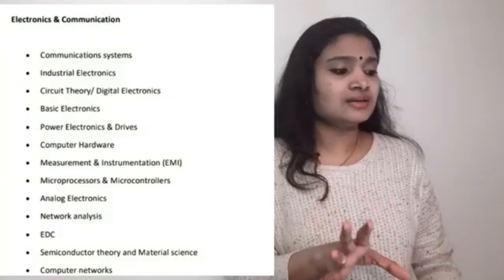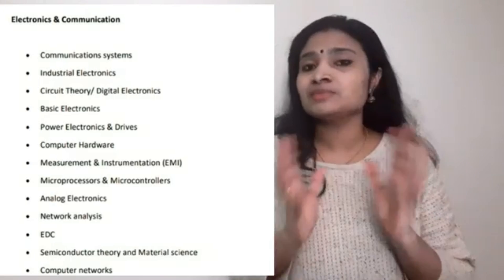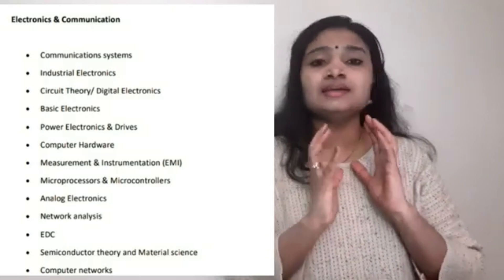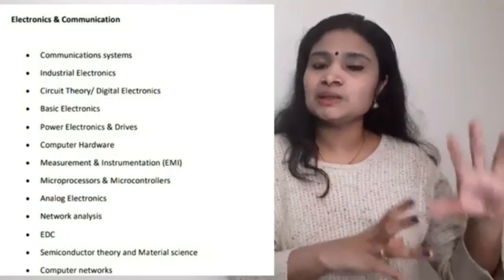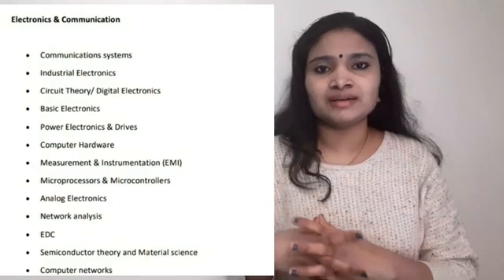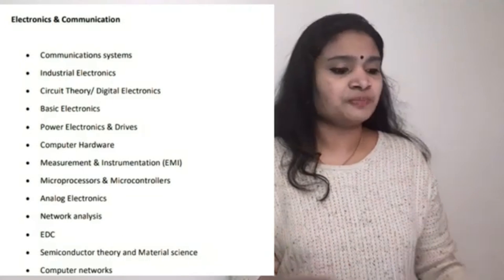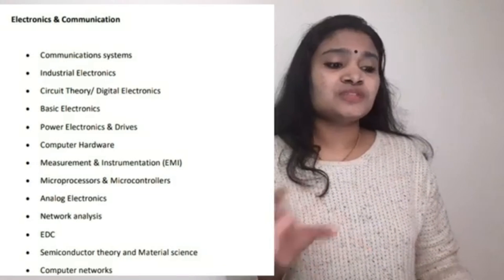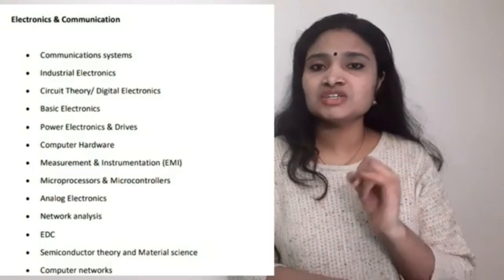Moving on to the technical subject area for electrical and electronics, 100 marks is the maximum from your respective diploma subject itself. You have to give maximum importance to your technical subject during preparation — only after covering your technical subject should you go to the generic area, otherwise you cannot crack the examination. Let us see the syllabus of electronics and communication. The first subject to cover is communication systems — both analog communication and digital communication are very important.